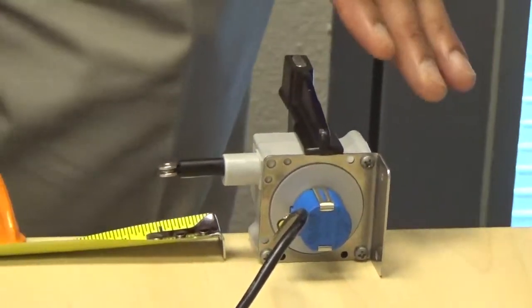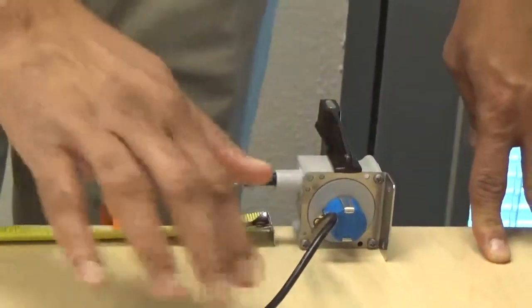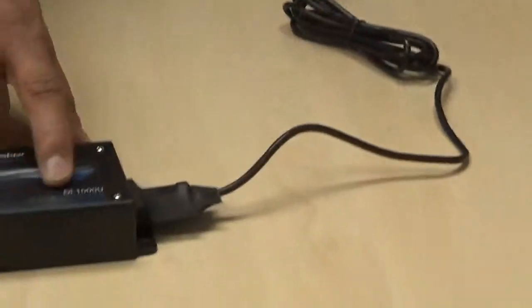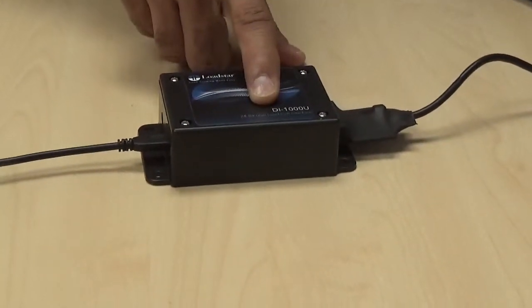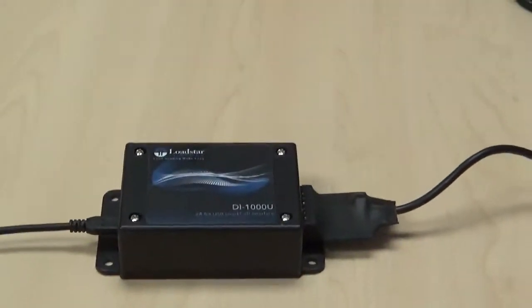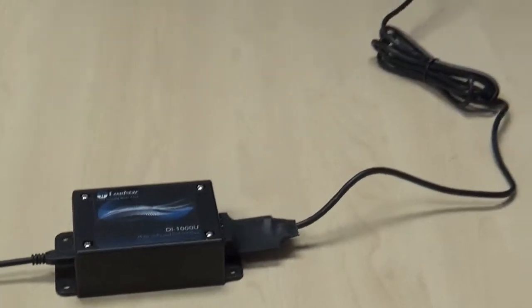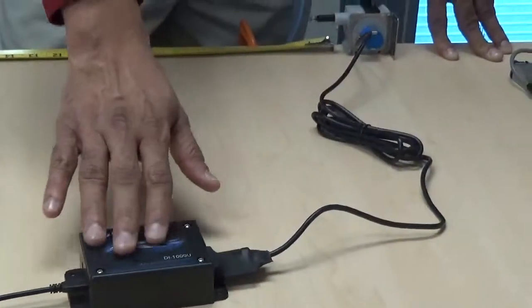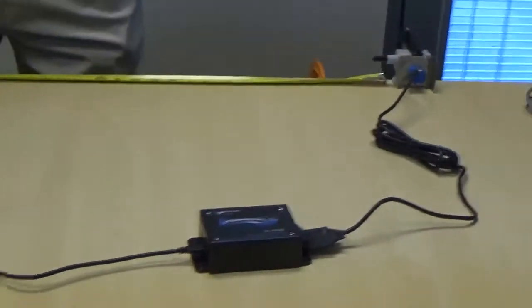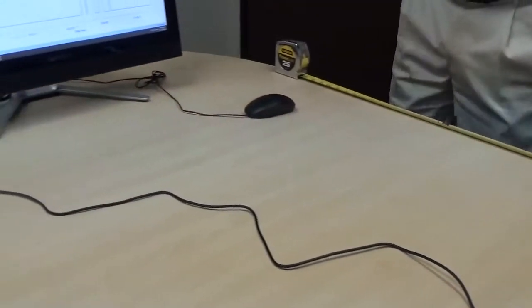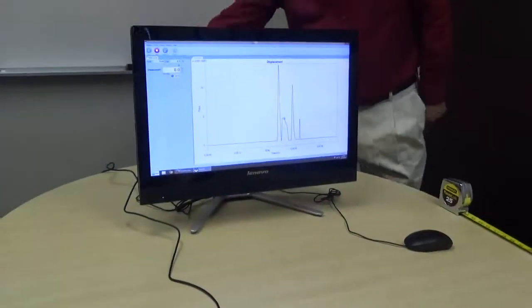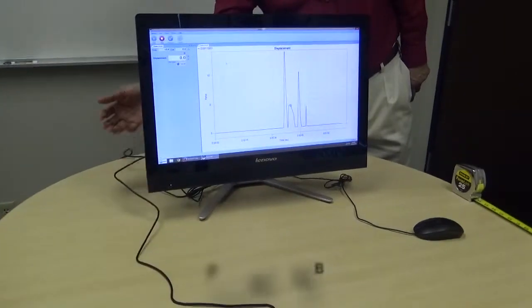In this case, the displacement sensor is connected to the DI-1000U meant for 5 volts, because this string pot is a 5 volt device, a 0 to 5 volt device. From here, this is connected to our all-in-one PC and it goes into just the USB port of this PC.